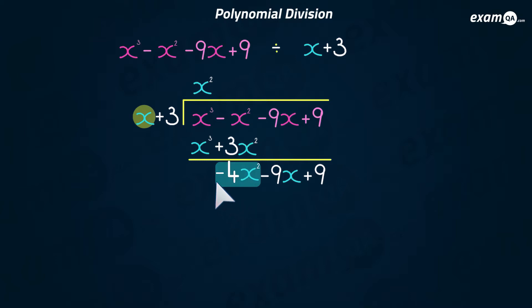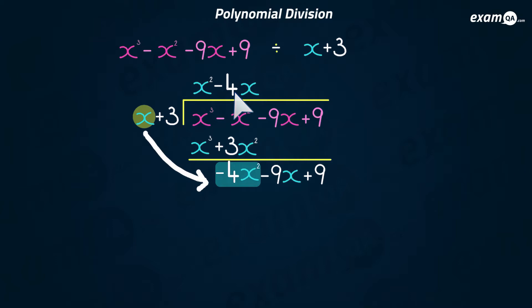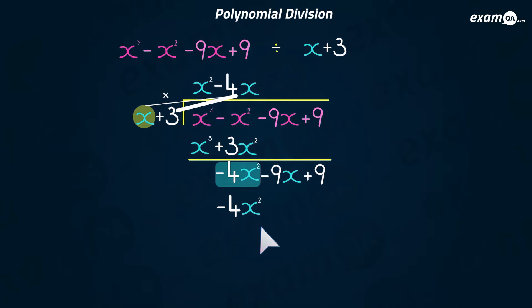Now we're going to say: how do we turn this x into minus four x squared? What do we multiply it by? Hopefully you said minus four x, and that minus four x goes at the top as part of the answer. The next step: we take that part of the answer, minus four x, and multiply it back to x plus three. So minus four x times x gives us minus four x squared, and minus four x times plus three gives us minus twelve x. Next comes the subtraction.